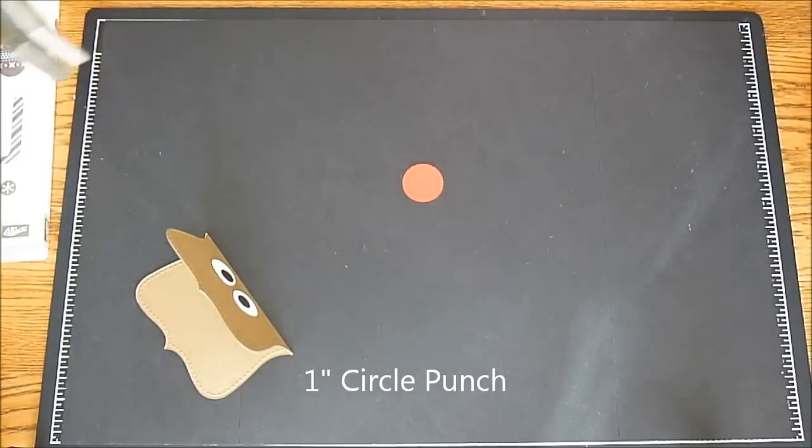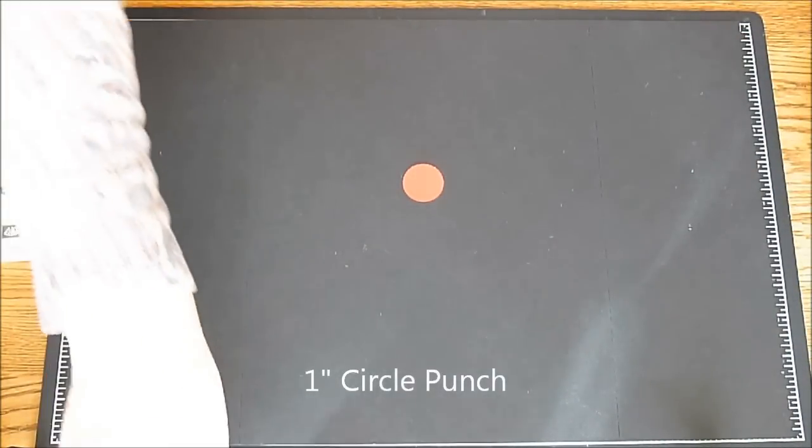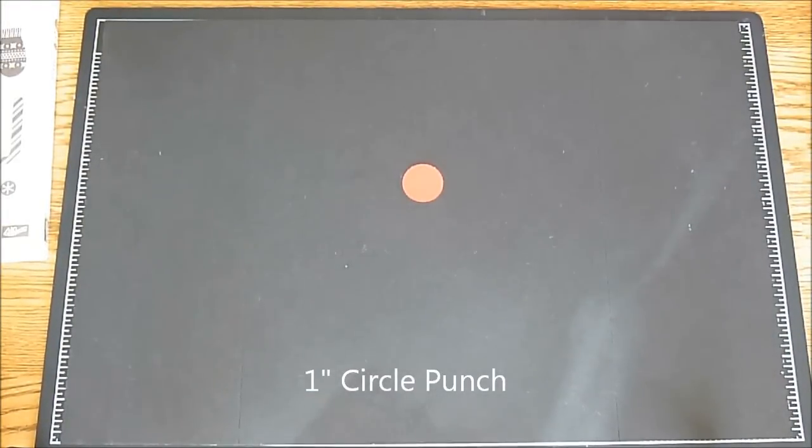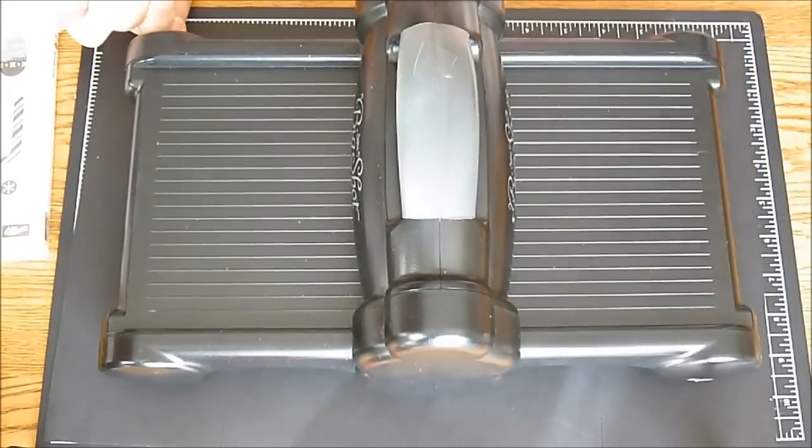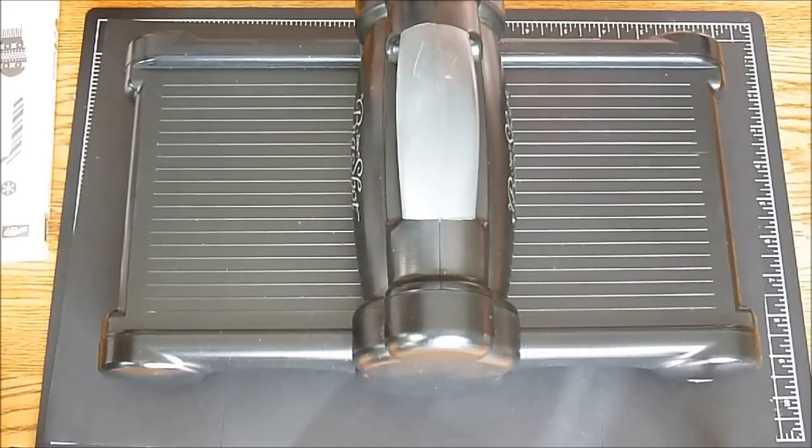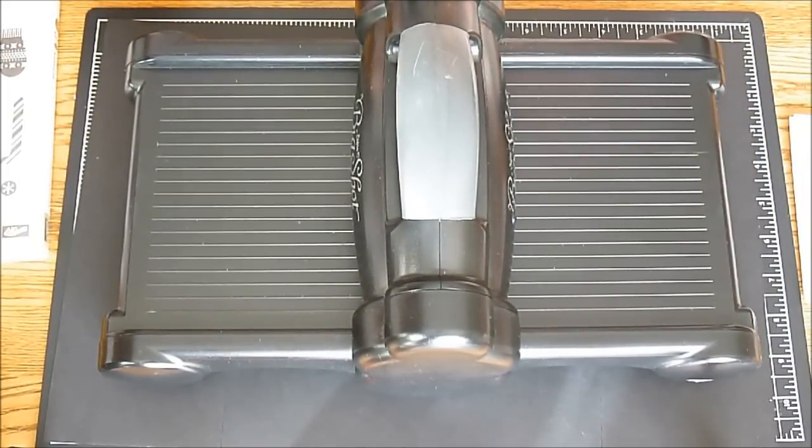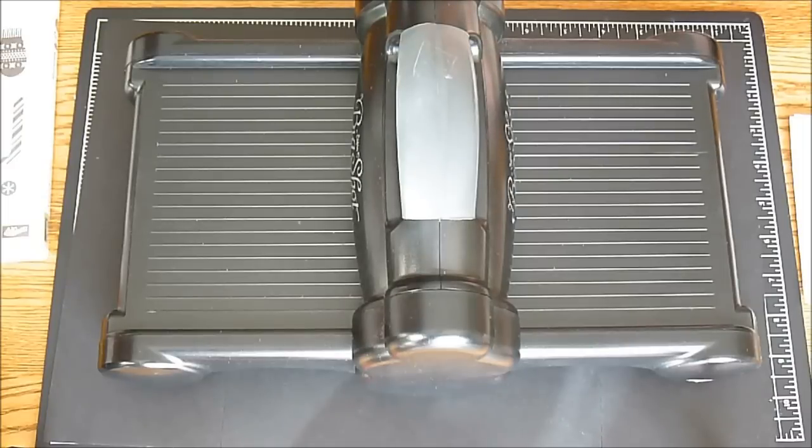I'm punching out reindeer's nose with a 1 inch circle punch. And I want a little bit of design on that. So we're going to take our Big Shot again. Now you can live in the stamping world without a Big Shot. I'm not sure how but I know I did it for probably 10 years so it can be done.